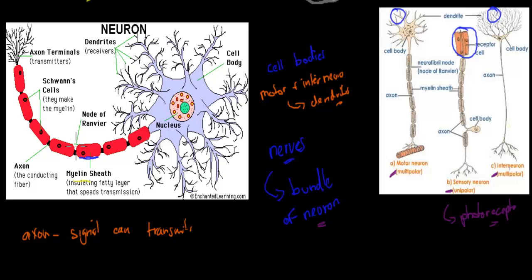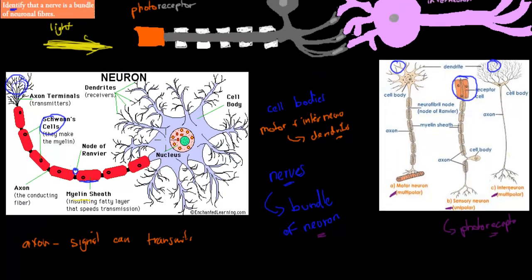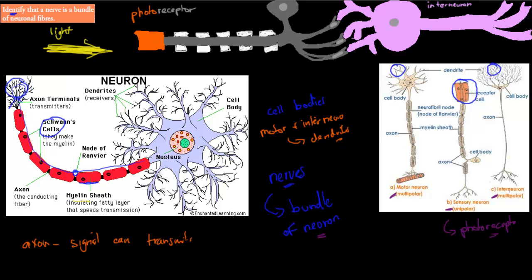Then we have the nodes of Ranvier. We won't discuss them in much detail now, but they're just there to make sure action potentials can happen, because they occur at these nodes of Ranvier. We've also got Schwann cells on the myelin sheets. And on the back, we have axon terminals. A signal gets sent from the dendrites through the axon, and eventually goes to the next neuron at the axon terminals.